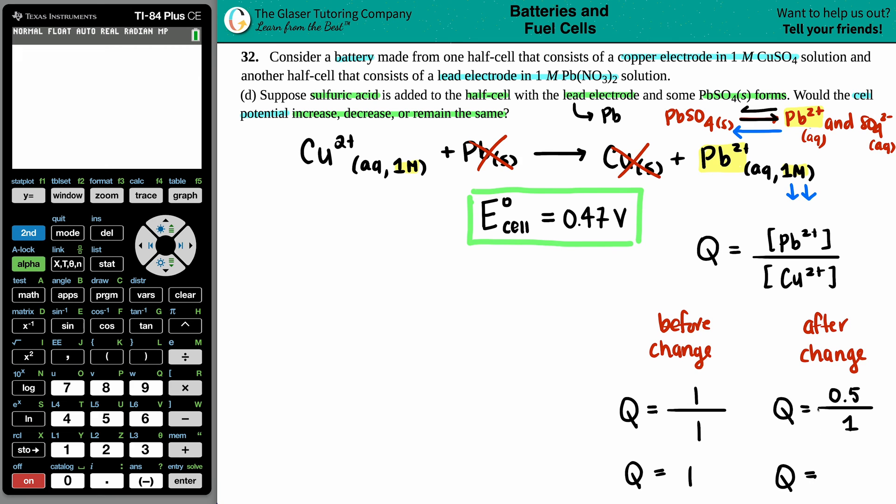The Cu2+ will still be one molarity because that didn't change. And now you have a Q value that's 0.5. So it seems like before the change to after the change, we decreased in the Q value.